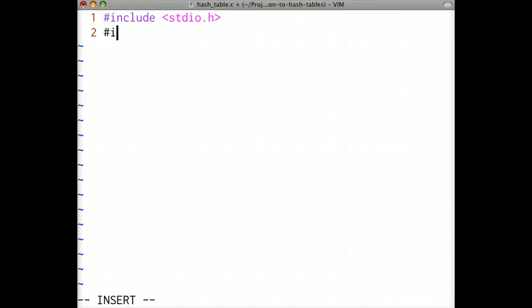We'll begin by including some header files for the functions we'll be using. Standard io.h includes the I/O functions in the standard library. String.h includes some useful string related functions, and standard lib.h includes functions for allocating memory.